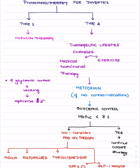If glycemic controls are lacking, optimize by adding a second drug along with metformin — agents like sulfonylureas, thiazolidinediones, DPP-4 inhibitors, or GLP-1 receptor agonists. If glucose levels are still not under control, you must consider adding insulin. When adding insulin, calculate the dose required for that individual based on their dietary intake and lifestyle modifications.